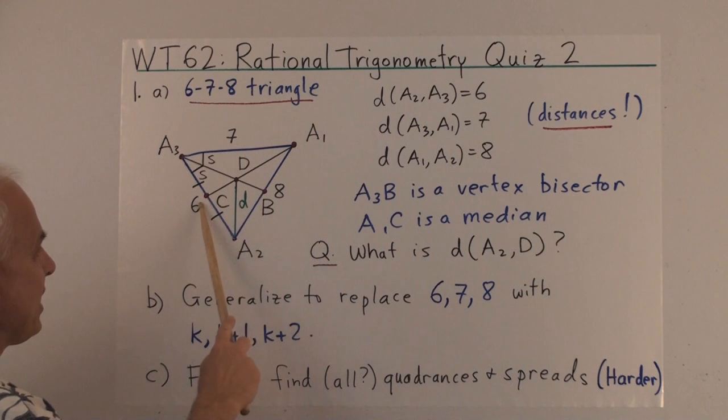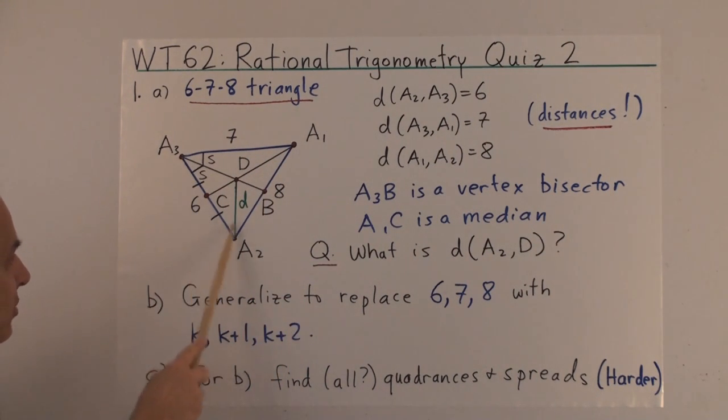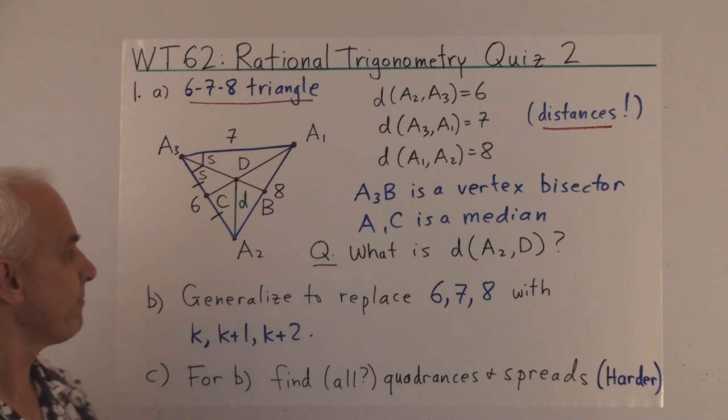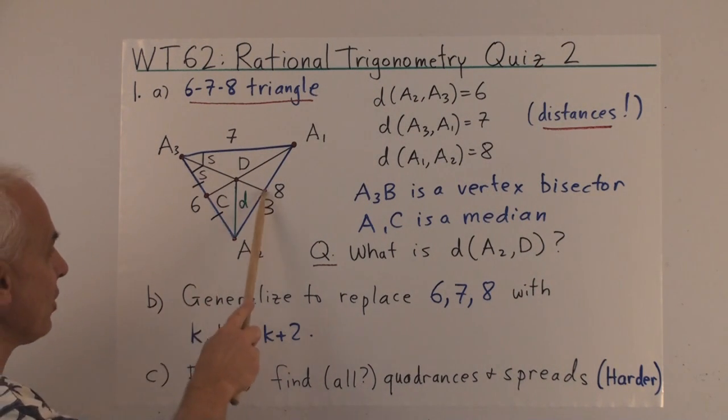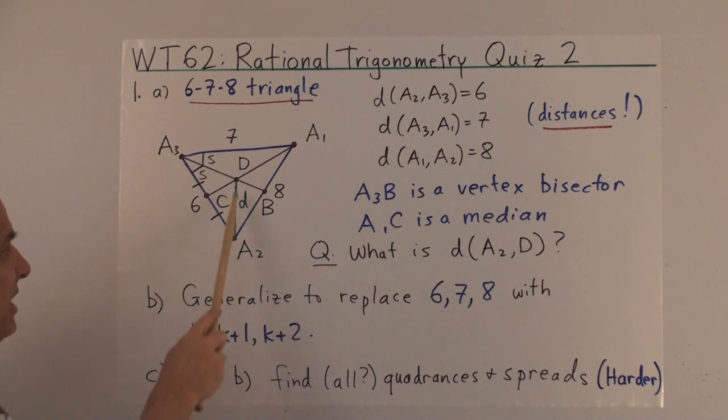The bisector meets the other line at B. And over here we have a median. A1 to C is a median. In other words, these two lengths are both 3. And these two lines, the median and the vertex bisector, meet at a point D. And we would like to know what is the distance between A2 and D.